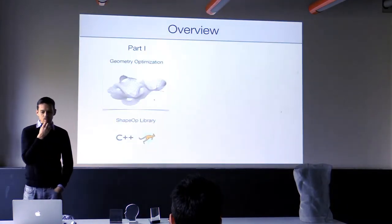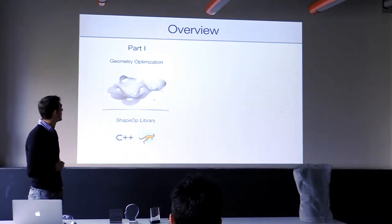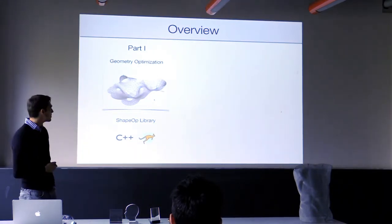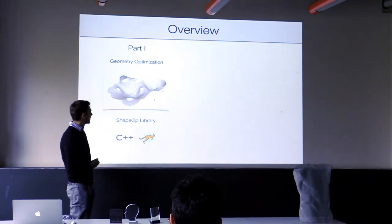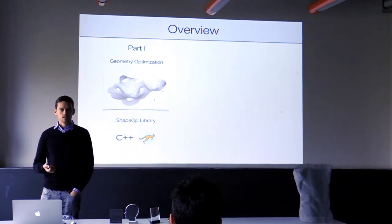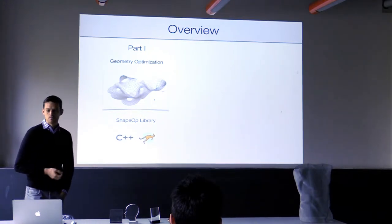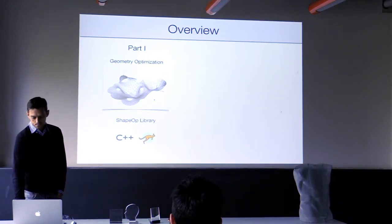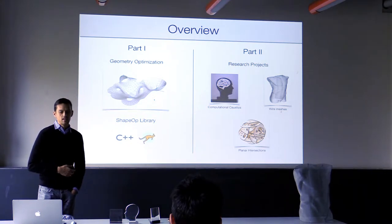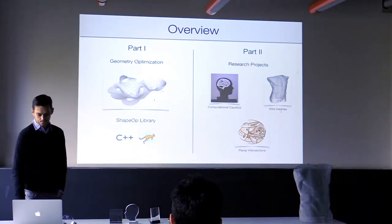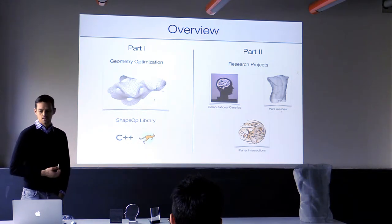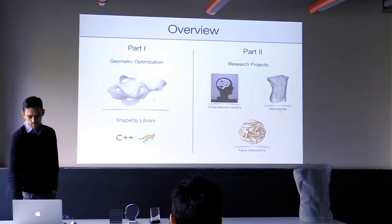The way I'm going to structure my talk is I'll have two parts. I'll start with a topic in geometry optimization, which is something we've done research in for a number of years. I'll briefly present a library we released that has plugins for Rhino and has been integrated into Kangaroo. Then in the second part, I'll show you some projects with a connection to architecture and tell you about the research process.